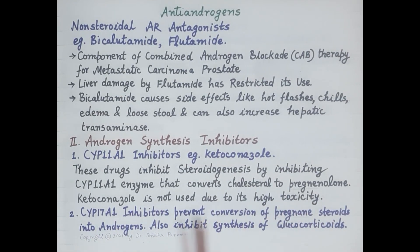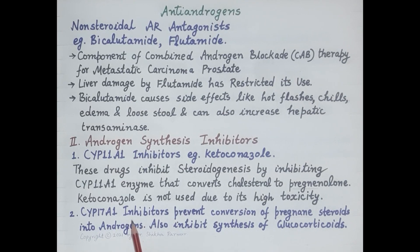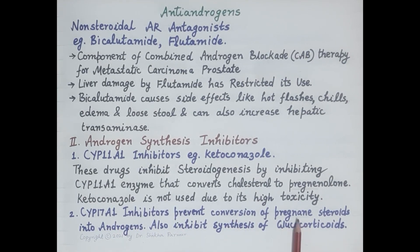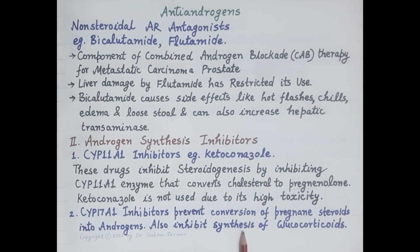The second type of androgen synthesis inhibitors are CYP17A1 inhibitors. These drugs prevent further conversion of pregnane steroids into androgens and also inhibit synthesis of glucocorticoids.